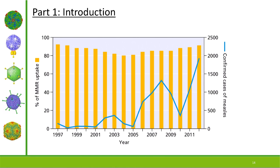Here's data from Great Britain showing MMR uptake percentage on one axis and confirmed measles cases on another. As the percentage of vaccinated individuals drops below 90%, we see a corresponding increase in cases. We see this drop in vaccination followed by an increase in measles cases. We need a high percentage of the population to be immune against measles — when we drop below that, we see that corresponding increase in cases.